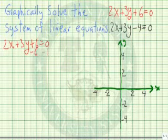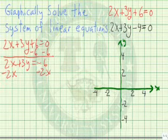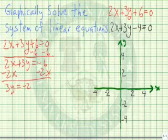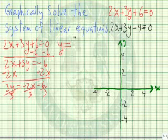Let's subtract 6 from both sides of the equation. 2x plus 3y equals negative 6. Let's subtract 2x from both sides. So we have 3y equals negative 2x minus 6. Let's divide through by 3. So our equation in y equals form is y equals negative 2 thirds x minus 2.